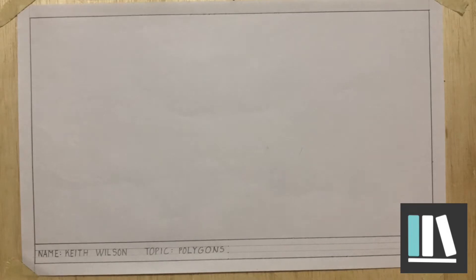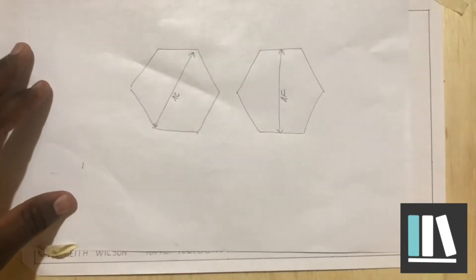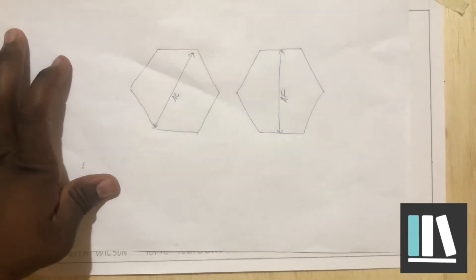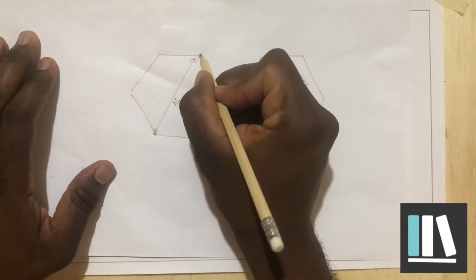When drawing a hexagon there are quite a few measurements that you can be given. They can tell you the length of one of the sides — I'm referring to regular hexagons here. They can also give you two measurements: one is referred to as the across corners and the other is referred to as the across flats.